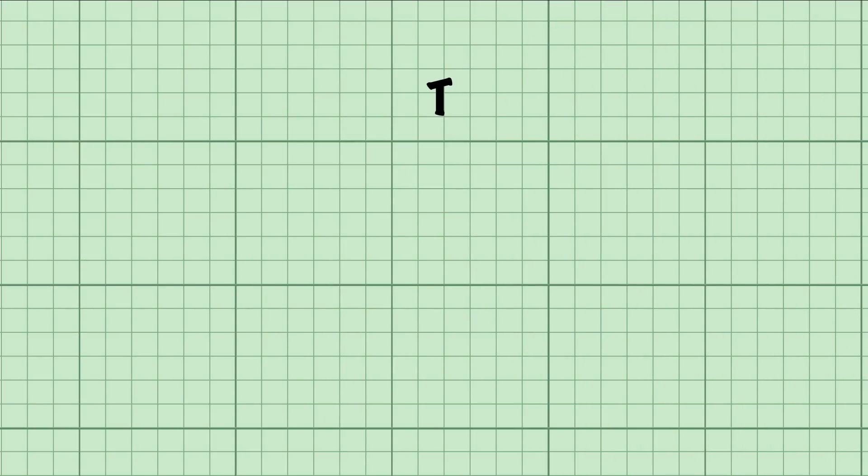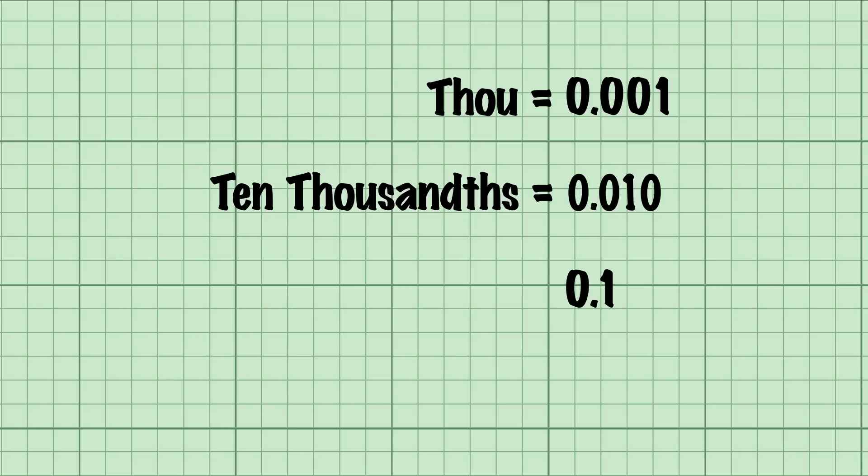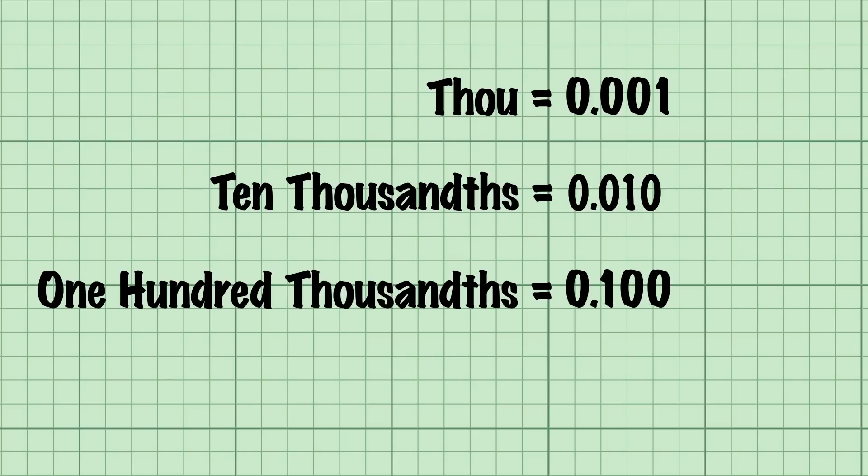The basic measurement is one thousandth of an inch, called a thousandth or a thou. This is how it's expressed on paper. And this is ten thousandths. So what would you call this? That's a hundred thousandths because we're counting up or down from the third decimal place.